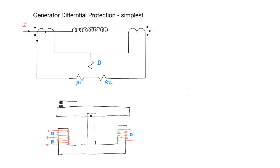Currents I_in and I_out should be equal under normal operating conditions — these are the primary currents seen by the current transformers. The secondary current from the first current transformer is called I1, and the secondary current from the second current transformer is called I2. Currents I1 and I2 flow out of the CT secondaries and into the differential relay.